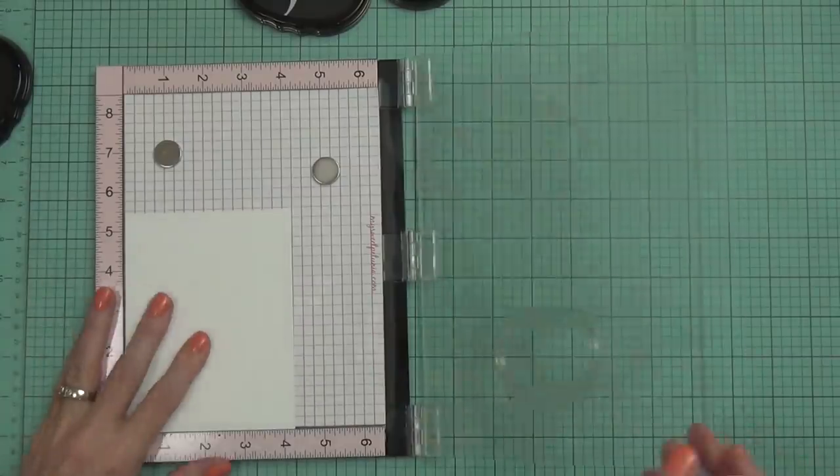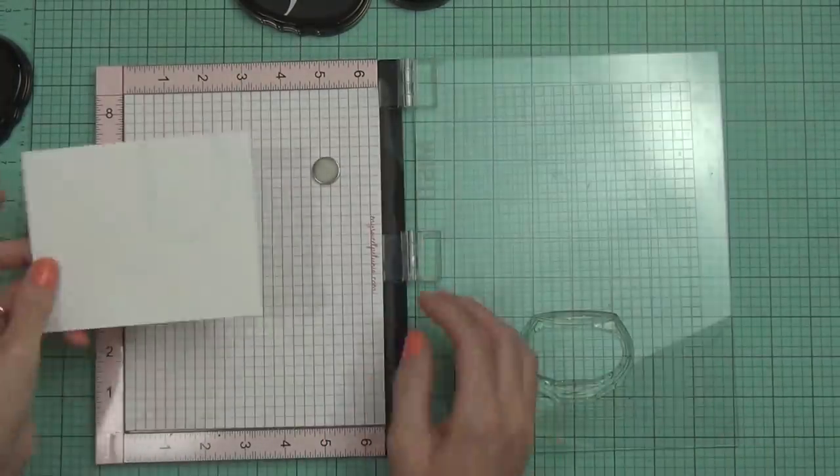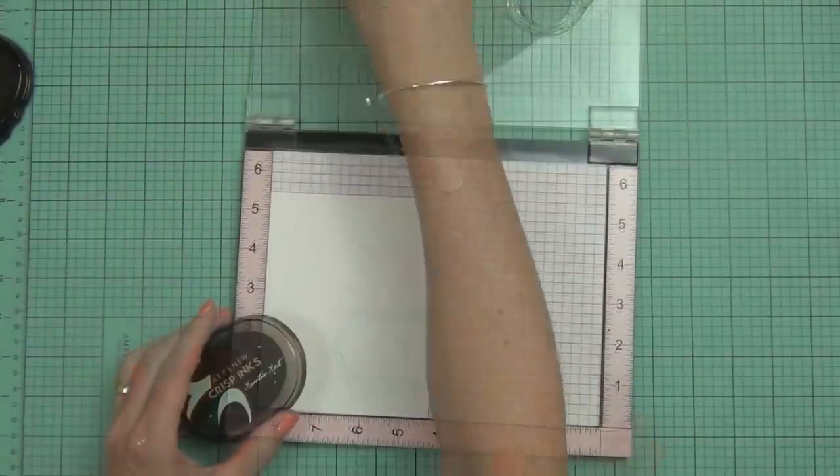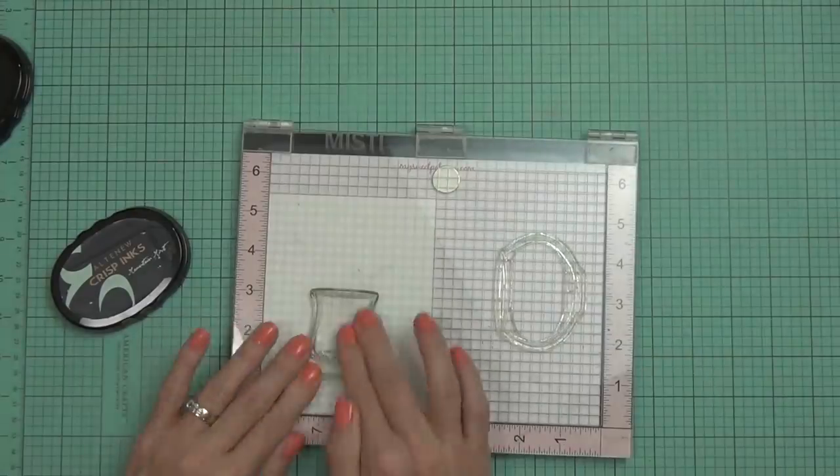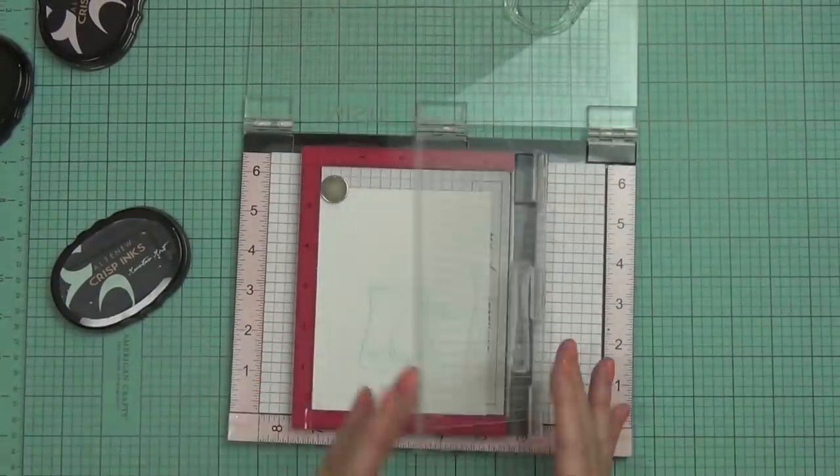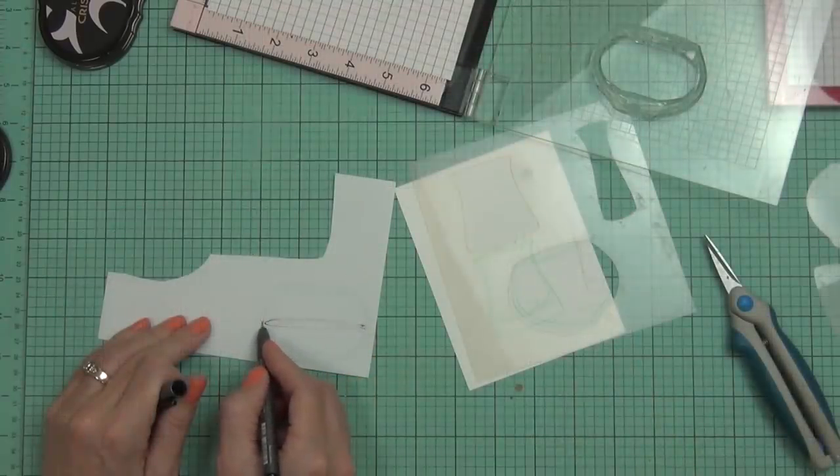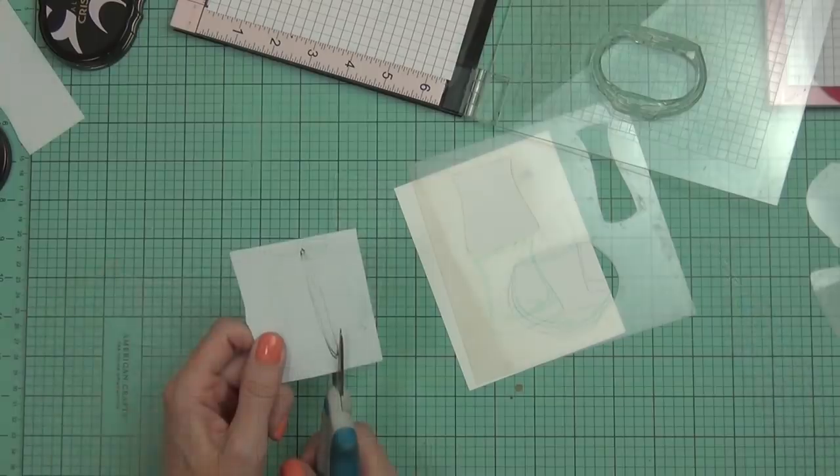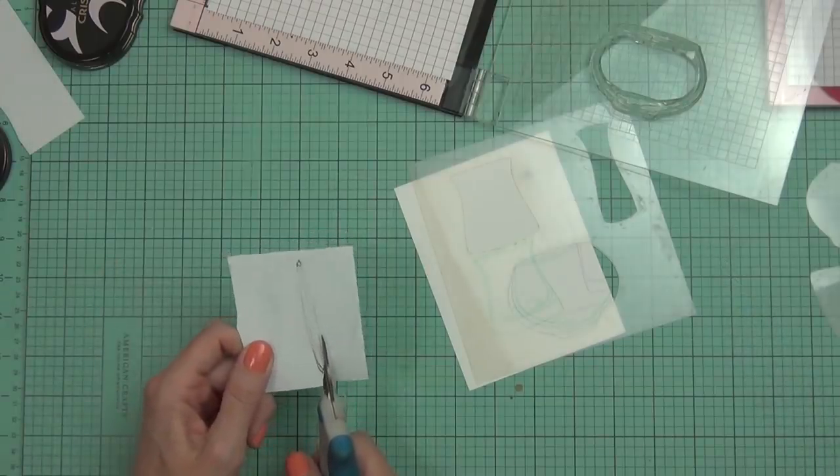Now I'm on to the second card design. Like I said, this is a very similar card in the fact that it's got the same layout, but other than that it is quite different. I stamped out—this is on a piece of cardstock the same size as my card front and I've actually stamped out